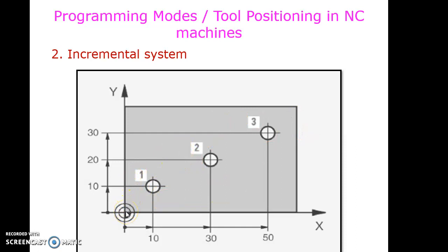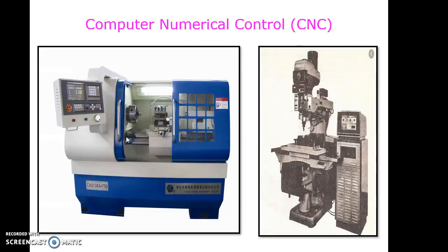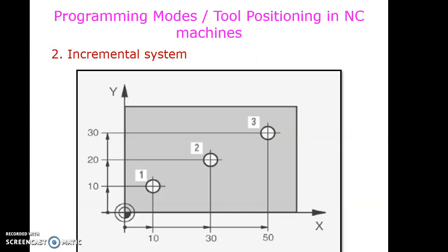In absolute mode, the reference point for all slots is 0,0. In incremental mode, the reference point for each operation is the previous slot's position. So the input for slot two is 20,10 and for slot three is also 20,10. So far we have discussed NC machines; now we will move on to discuss CNC machines.